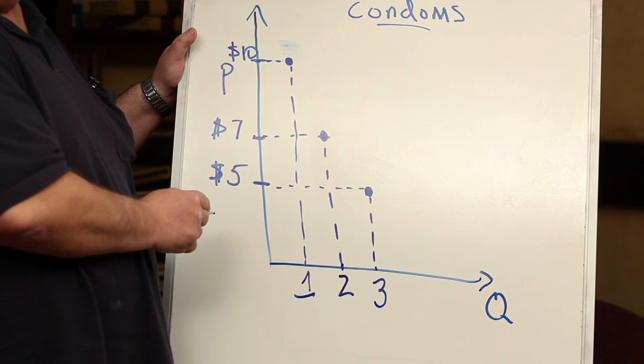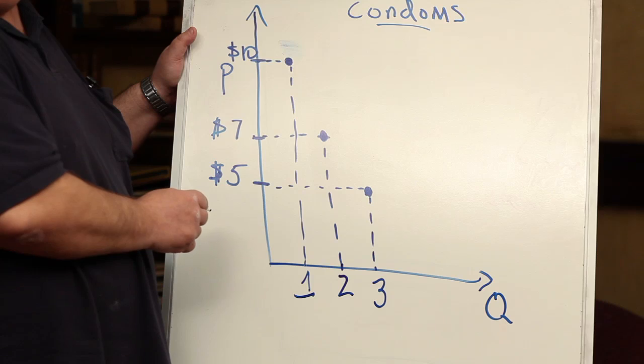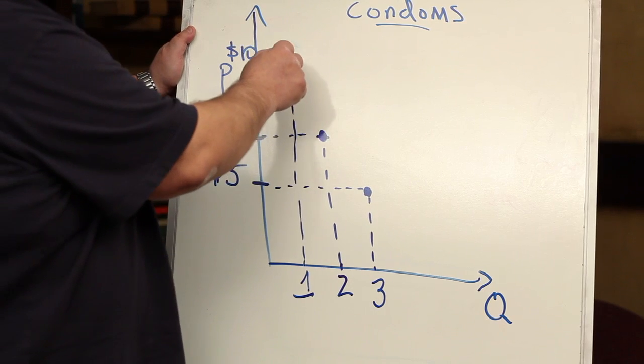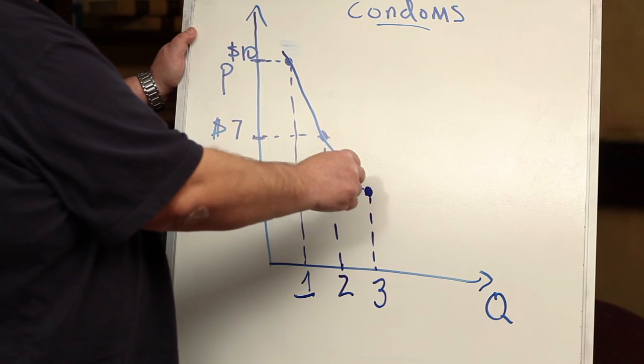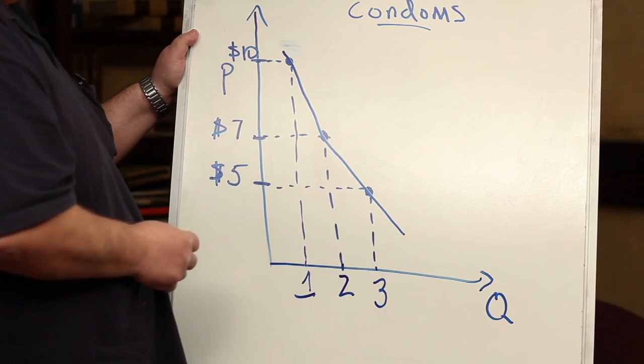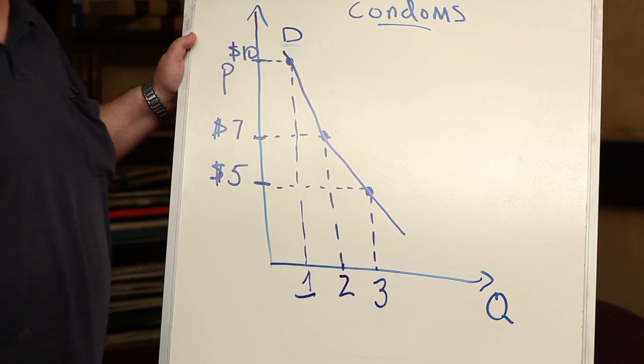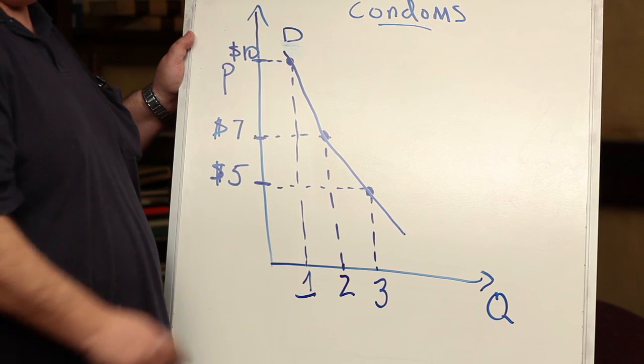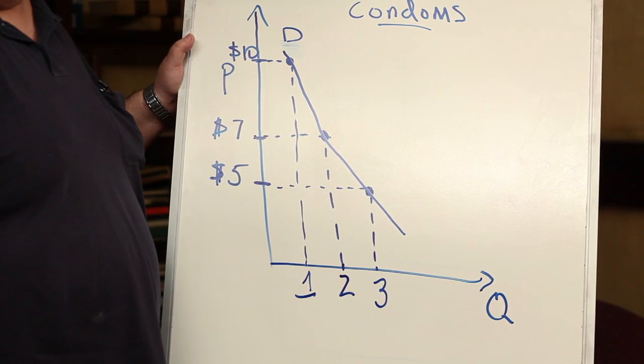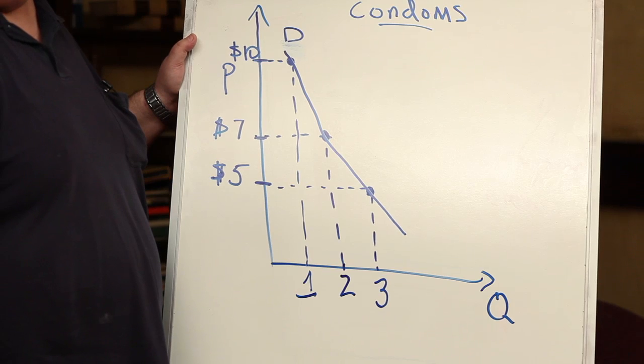But let me show you something really neat. What would happen if I just played connect the dots? Well, I'll even give you a hint by putting a D over here. When you connect all the different quantity demanded at different prices, you wind up with something called the demand curve.